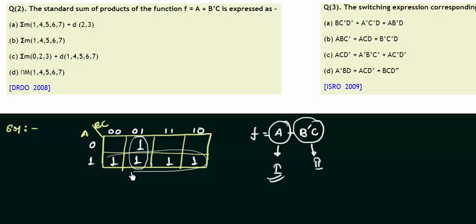So we have reached to our initial map from which this expression has been derived which is this one. And by making these two groups we can find this expression. So let's see what we are having in our options. In our options it is given in the form of your min terms and the don't cares. So let's make the min terms and the don't care from this map.